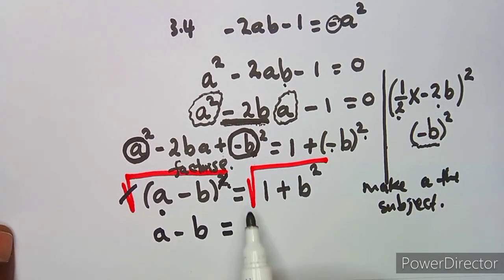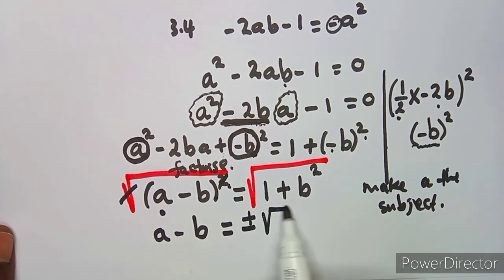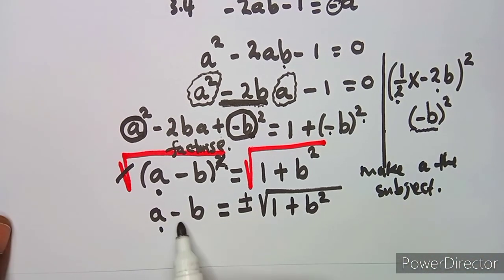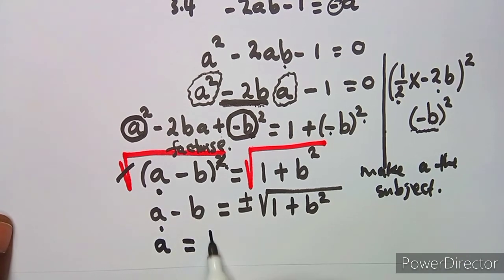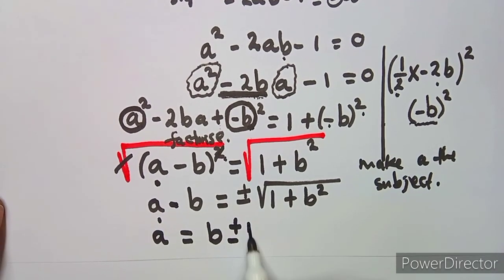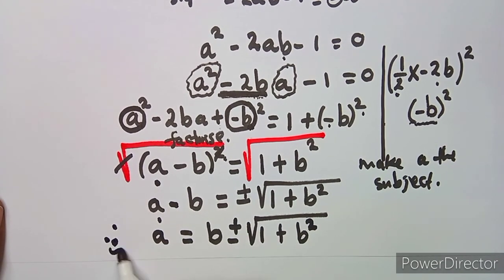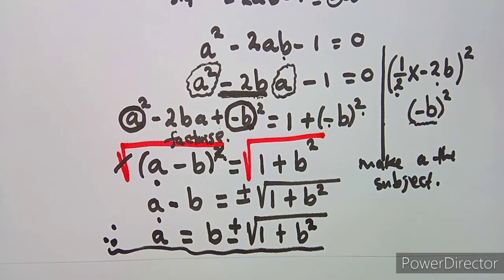Finally, transpose negative b to the other side of the equation to make a the subject. Therefore, a equals b plus or minus the square root of one plus b squared. Solving for a and making a the subject of the formula are one and the same thing — these are the stages to follow when applying the completing the square method.